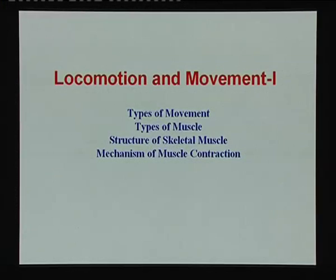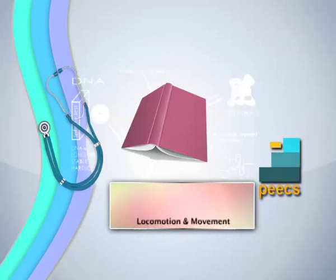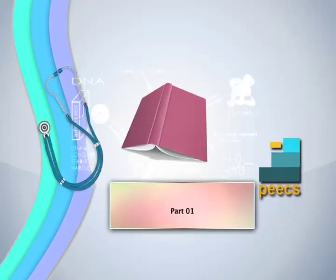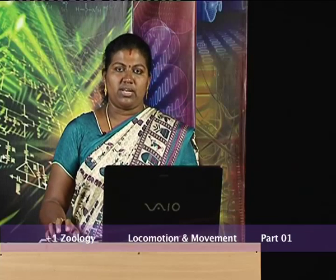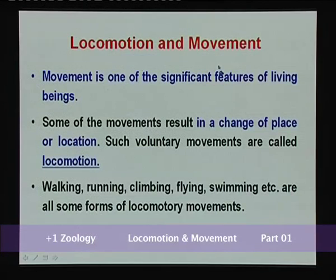Today, I will be discussing the topic Locomotion and Movement. This comes under animal physiology of your first year biology topics. In this part, I will be discussing the types of movement, types of muscle, structure of skeletal muscle, and mechanism of muscle contraction. But first let us see Locomotion and Movement.